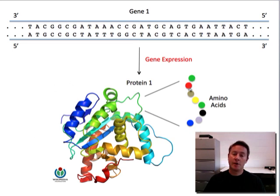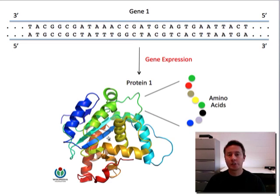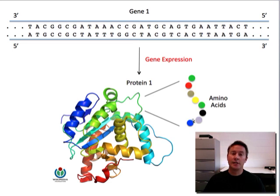The sequence of amino acids within the polypeptide chain determines the overall three-dimensional shape of the protein when that chain starts folding up. In turn, the three-dimensional conformation of the protein will determine how it's going to function in the cell — what can it do, what can it bind to, etc. So the sequence of amino acids present within the protein is a key determinant of its structure and in turn its function.